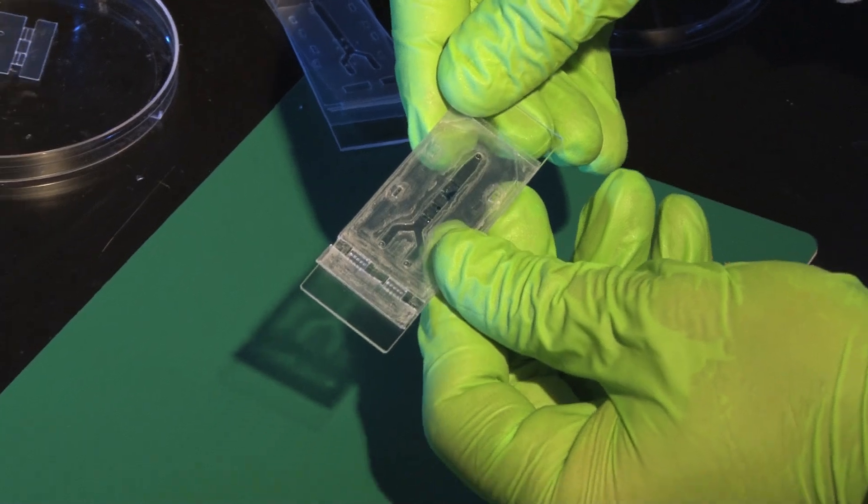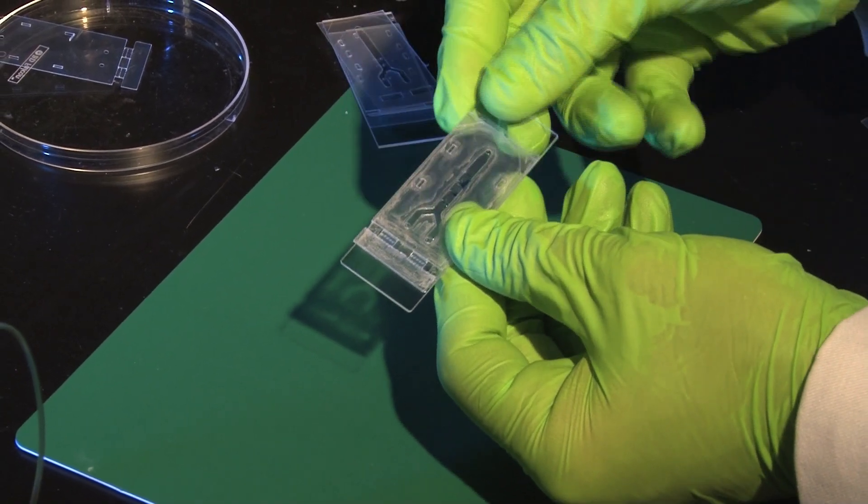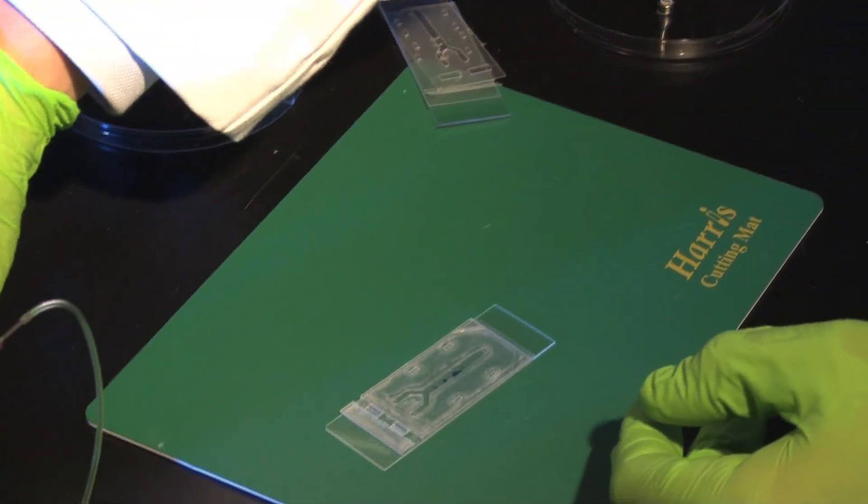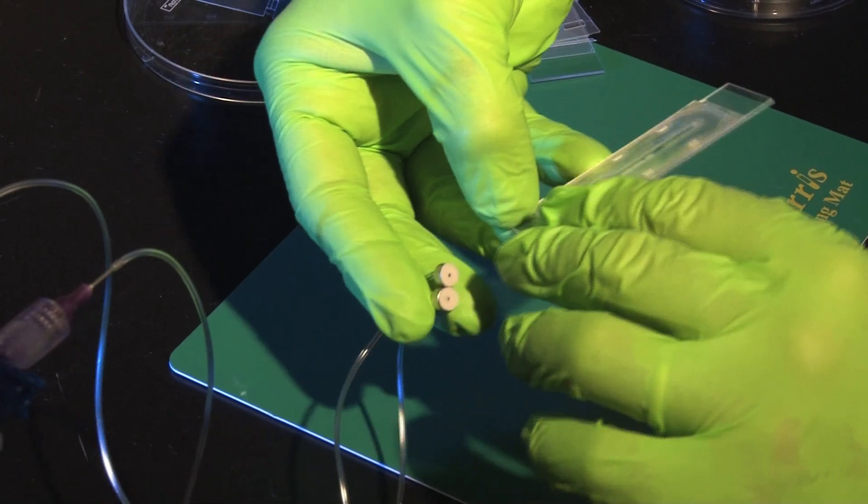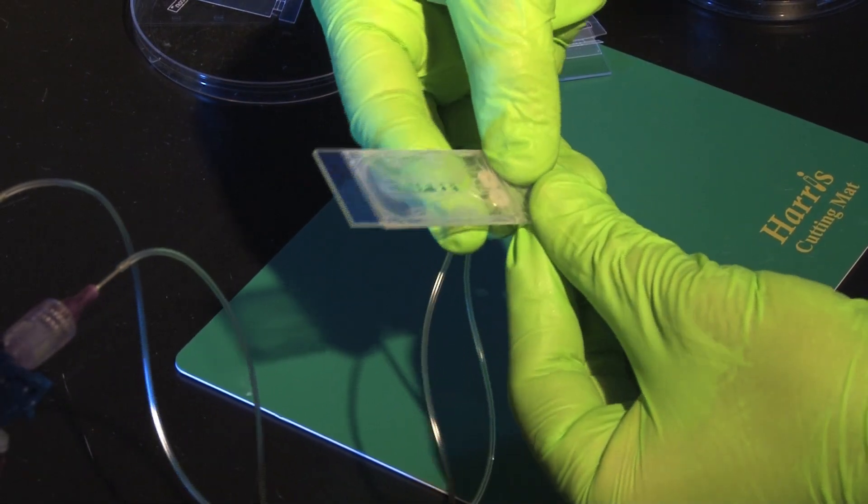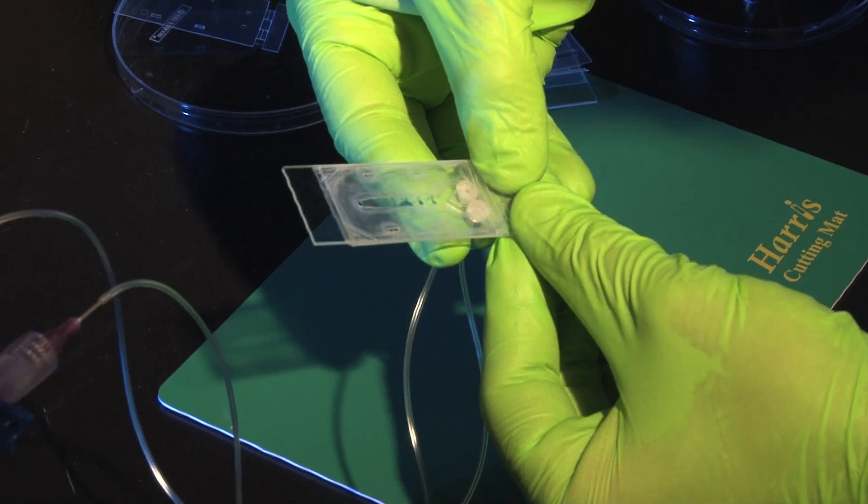So the chip is closed now but in the upper channel we've got these holes but there's no liquid. At this point what I do is that I use magnetic connectors which are magnets with holes. I place them aligned with the entry holes of the chip.